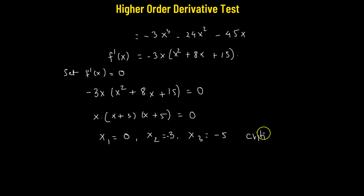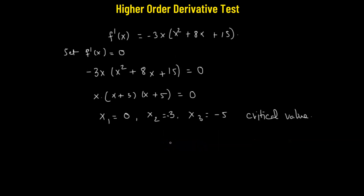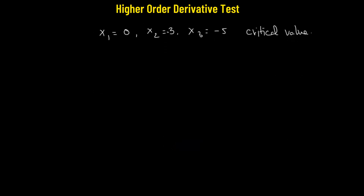These are called critical values — the values of x where the derivative (slope of the tangent line) equals zero. However, we cannot say for sure whether x₁ = 0, x₂, or x₃ are local maxima or local minima without further analysis. In order to be completely sure, we use the derivative test. We'll begin with the first derivative test.